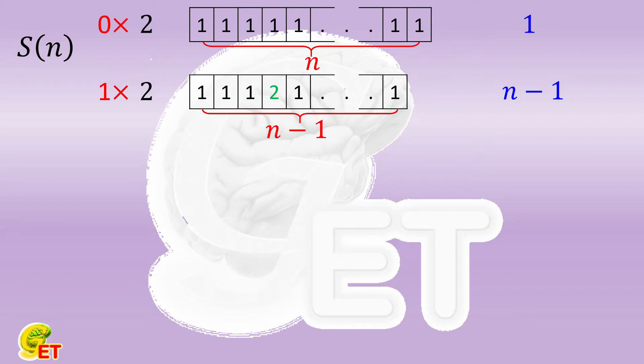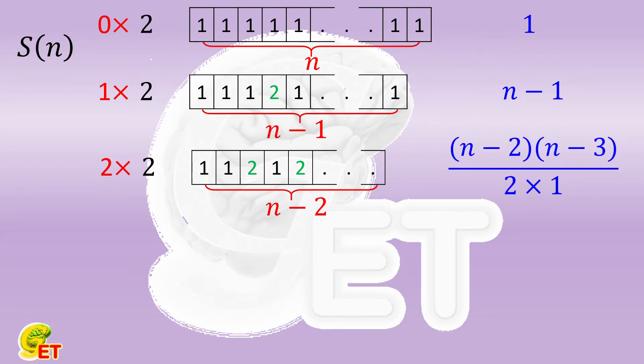If there are 2 digits being 2, it is an n-2 digit number, and you need to select 2 places for the digits 2. So the number of possibilities in this case is n-2 multiplied by n-3, and then divided by 2 times 1. The next one is n-3 times n-4 times n-5, then divide by 3 times 2 times 1.